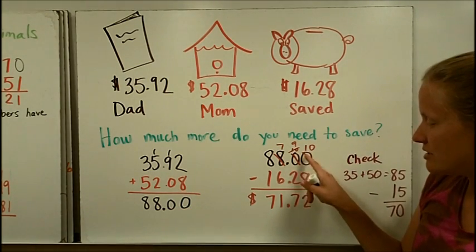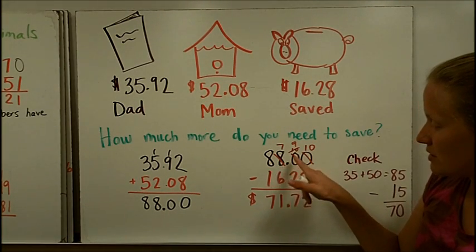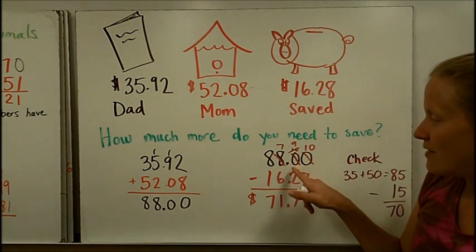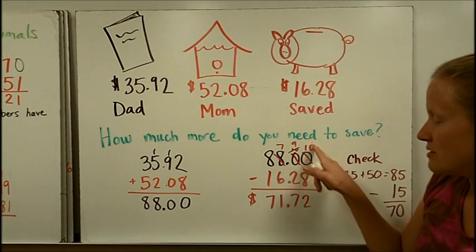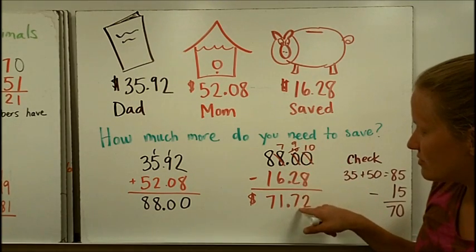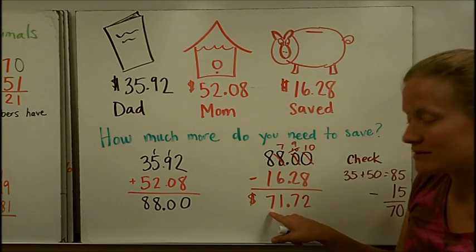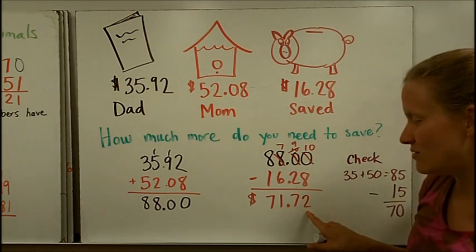If Decimal Dog had eaten these zeros and decimals, you would have still wanted to spit it back out here because you need those zeros to be able to subtract. We borrowed from the ones place and turned that into 10 dimes, then borrowed one of those dimes and turned it into 10 pennies. 10 minus 8 is 2, 9 minus 2 is 7, 7 minus 6 is 1, 8 minus 1 is 7. So you need to save $71.72.